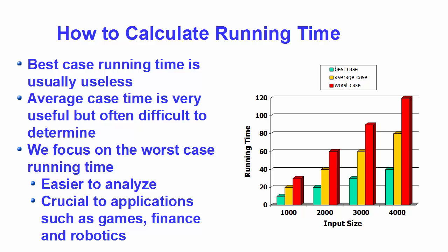The best case running time is usually useless because in the real world it will never happen that the best input is always provided. The average case scenario is very useful but often very difficult to determine. So generally we focus on the worst case scenario to calculate the running time, because it's easier to analyze and it's crucial in applications like games, finance applications, or robotics.